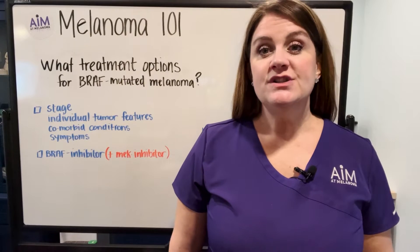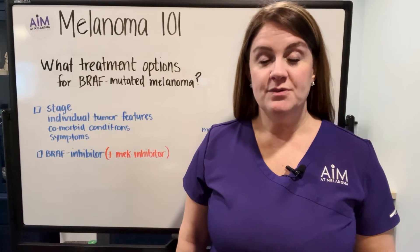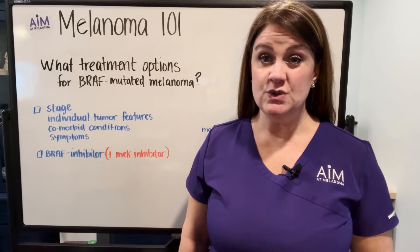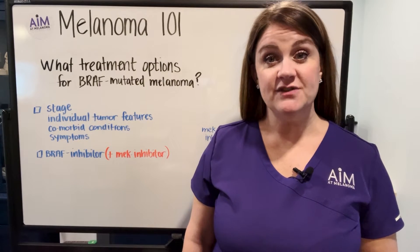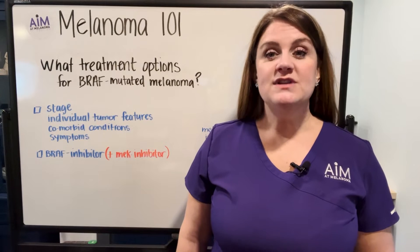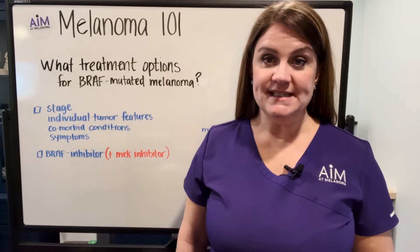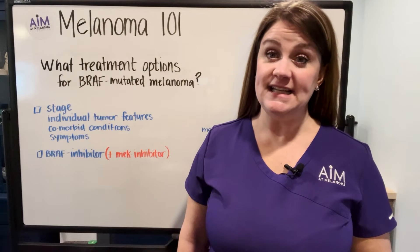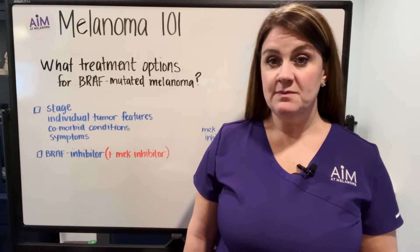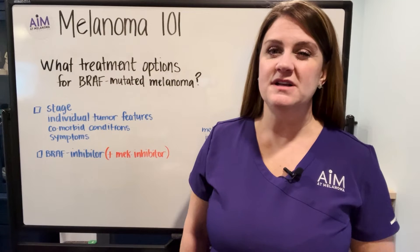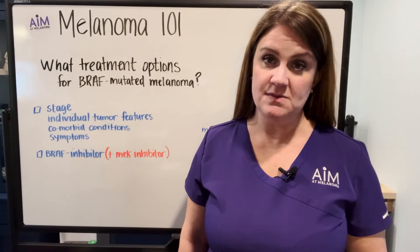Just to review quickly, BRAF mutations are present in about 50% of cutaneous melanomas — melanomas that arise from the skin. Of these mutations, the vast majority, about 85 to 90%, will be V600E. However, you can also have the mutation BRAF V600K, which is present in about 5 to 7% of patients with this mutation.